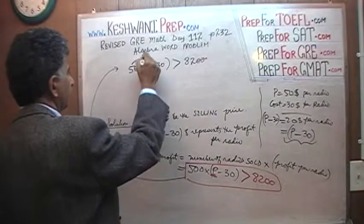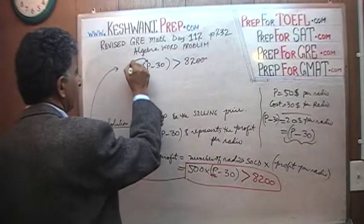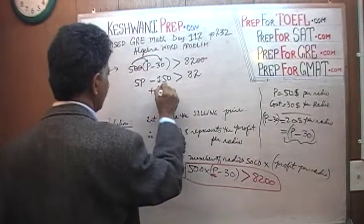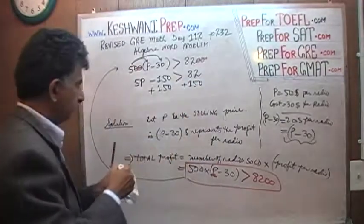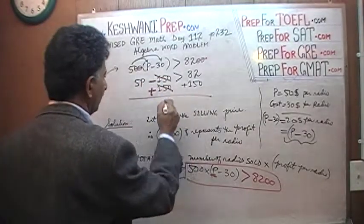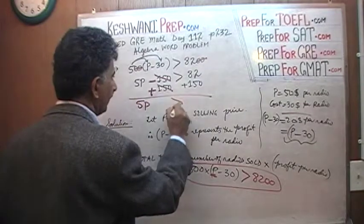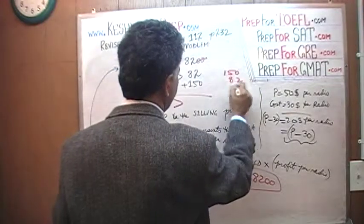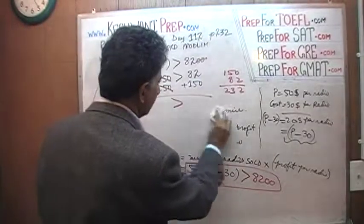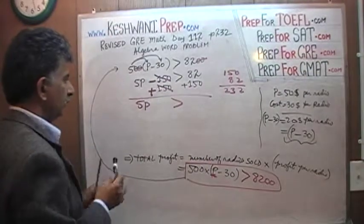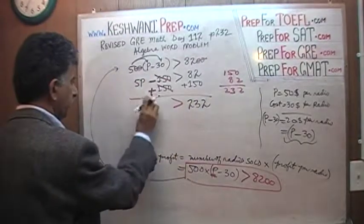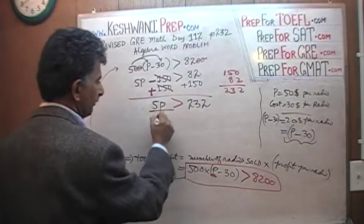We open the parentheses: 5 times P is 5P, and 5 times 30 is negative 150, so 5P minus 150 is greater than 82. Adding 150 to both sides, negative 150 and positive 150 cancel out, and we're left with 5P is greater than 150 plus 82, which equals 232. So 5P is greater than 232. Divide both sides by 5.